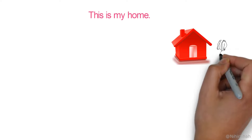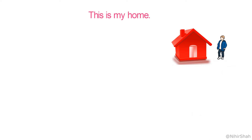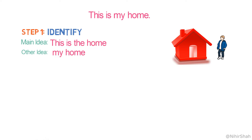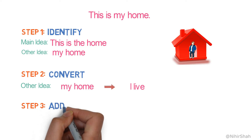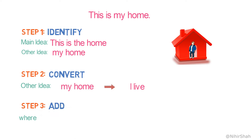Let's look at the next example: 'This is my home.' This is an interesting sentence — it seems there is only one idea and we won't be able to convert it into a complex sentence. However, when you break it, you get more clarity. Step one, the main idea is 'this is a home' and the secondary idea is 'this is my home.' Step two, we can ask: what is the use of it? We live there, right? So we can write the second clause as 'I live.' Step three, join them with the conjunction 'where.' So the final sentence is: 'This is the home where I live.'